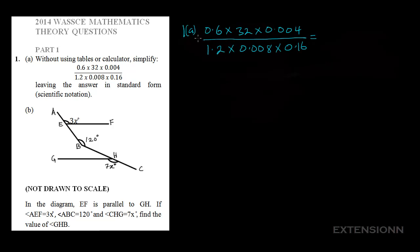What we'll do is try to bring out all numbers from each of these decimals. For 0.6, to get the whole number 6 out of it, we move the decimal point one step forward, giving us 6 times 10 to the power minus 1. For 32, we already have a whole number, so we just write 32. For 0.004, we move the decimal point 3 times, giving us 4 times 10 to the power minus 3.